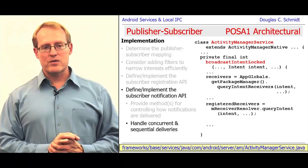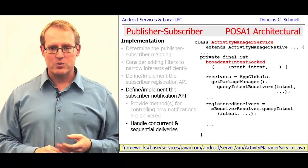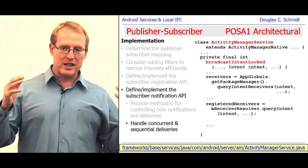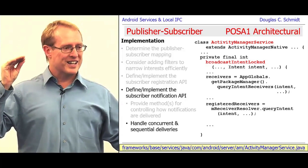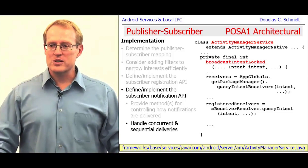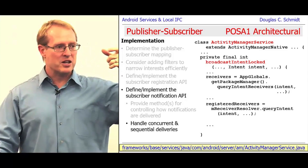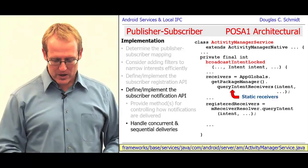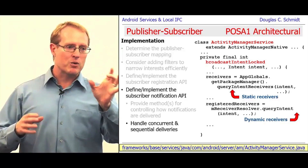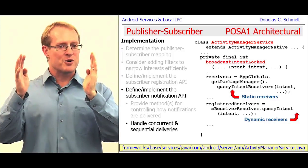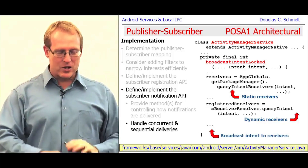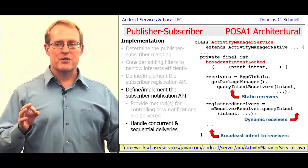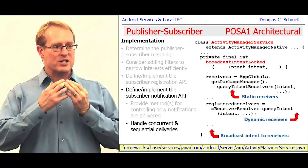Under the hood, in the Activity Manager Service, there's a method called Broadcast Intent, which is the entry point. It very quickly grabs a lock and calls Broadcast Intent Locked, which is like 350 lines of very nasty, hard-to-figure-out code. Basically, it takes the intent being broadcast and looks up whether that intent has been registered in Android manifest files — those are the static receivers — or registered via calls to register receiver, which is dynamic. It then builds up a set of receivers that are going to handle these requests.